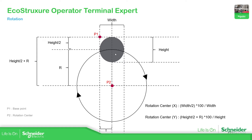We also have the rotation center, which would be this point. In order to calculate this point, there are a few things that we need to check — for example, the radius that we want, and the width and height of the object that we are going to work with. Based on that there is some calculation that we can do in order to calculate this.